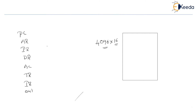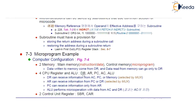Now, what we do is we will make some simple changes in this. Because when you want to design a micro-programmed control unit, that has to be based on some specific system. Looking at this, we do have too many registers. To make the thing simple, what we do is we will have only five registers: data register, address register, program counter, and accumulator.